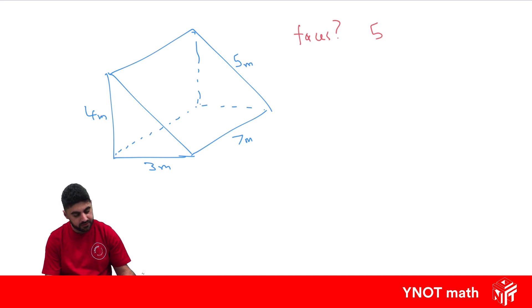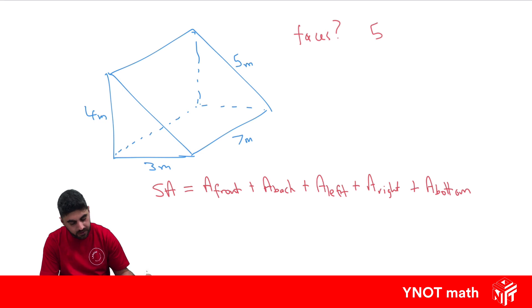To find the surface area, we need the area of every one of those faces added together. It's going to be the area of the front, plus the back, plus the left, plus the right that's on the slant, plus the bottom. What can help is putting the formula above the area. The front is a triangle, so it's a half times the base times the height. Same with the back. On the left we have a rectangle, base times height. The right is another rectangle, base times height, and the bottom is a rectangle, base times height.